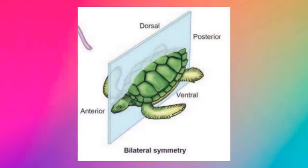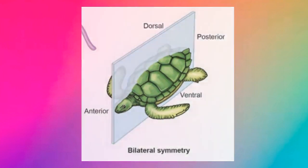Looking at the picture, the animal is cut along the central axis, giving 2 equal halves — head to tail. If cut crosswise, we do not get equal halves; we get head with one structure and tail with another structure. That is why it is called bilateral symmetry.